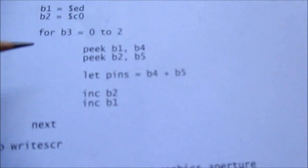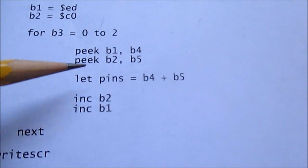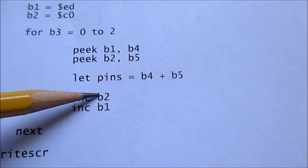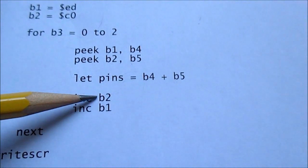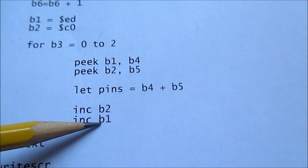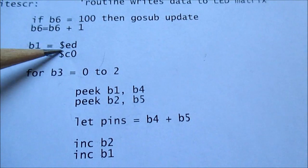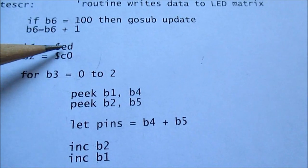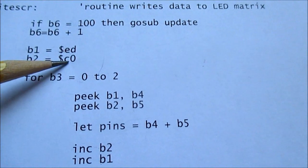Okay. And once it does that, it increments these memory address locations for the characters. Or I'm sorry, for the, that's the graphics aperture again, and that's the column location.